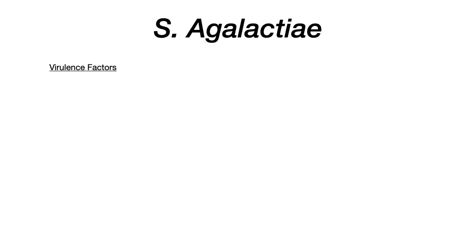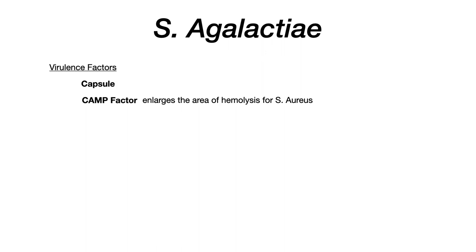Let's talk briefly about virulence factors — there's really not a lot here that you need to know. The first one is that strep agalactiae has a capsule. The second thing, which technically is not even a virulence factor but gets listed in this category pretty often, is CAMP factor. This just refers to the name of a test that identifies strep agalactiae — it enlarges the area of hemolysis for staph aureus. CAMP factor has nothing to do with cyclic AMP; it's actually an acronym describing the names of people involved with testing for this pathogen. It's not really high yield.